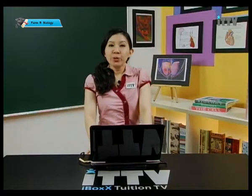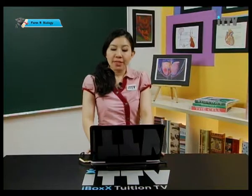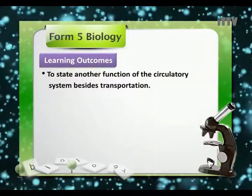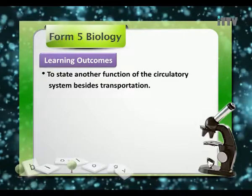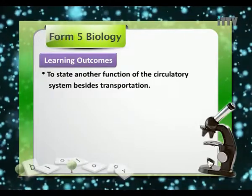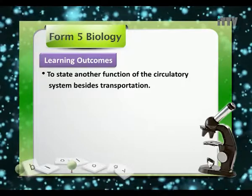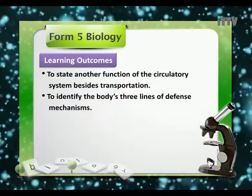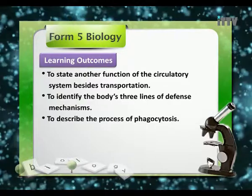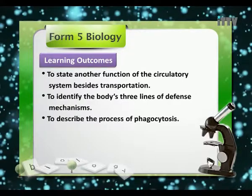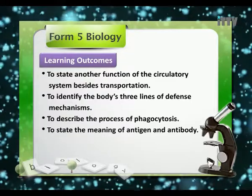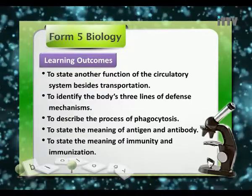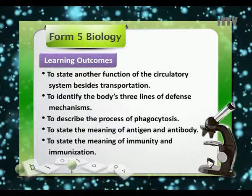We're basically focusing on the body defense mechanism and immunity. The learning outcomes for today will be to state another function of the circulatory system besides transportation, to identify the body's three lines of defense mechanism, to describe the process of phagocytosis, to state the meaning of antigen and antibody, and to state the meaning of immunity and immunization.